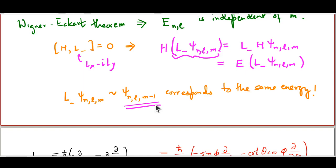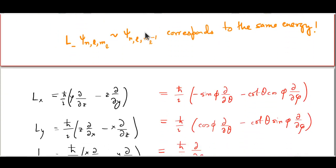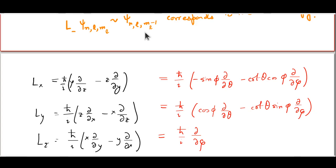To understand this, we need to write down the angular momentum operators in spherical polar coordinates. What we have on the left are the angular momentum operators written in terms of Cartesian coordinates. Using the relationship between Cartesian and spherical polar coordinates and the standard chain rule of partial differentiation, after a bit of non-trivial labor, you would find that Lx, Ly, Lz turn out to be these three forms.